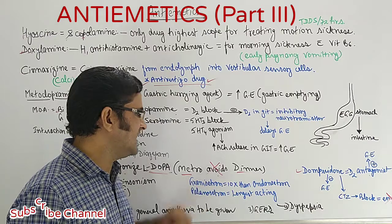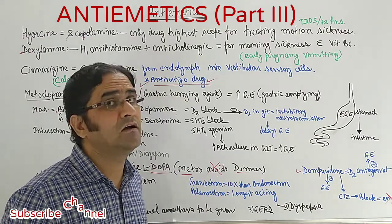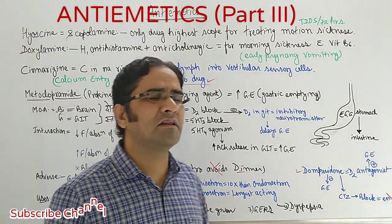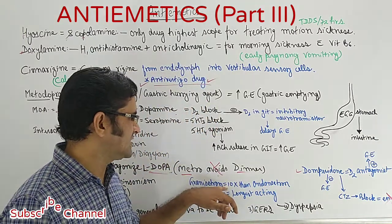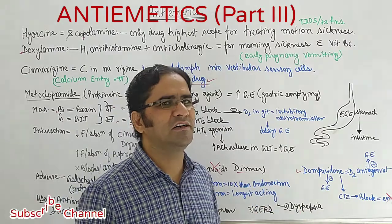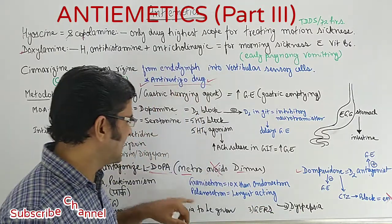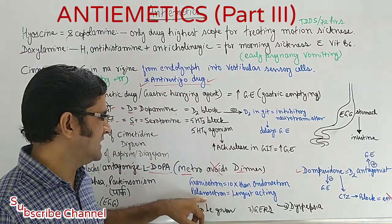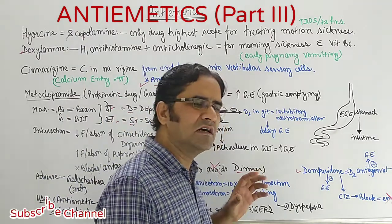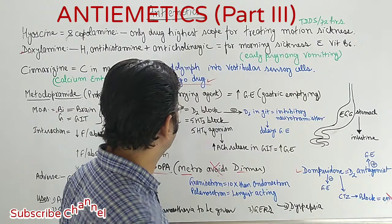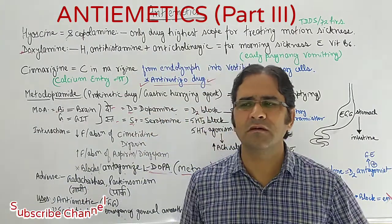Next category: 5HT3 antagonist. The drug is granisetron - granny, grandmother, and grandmother having experience, we know - it means it is 10 times more potent than ondansetron. The question part second is palonosetron - it is the longest acting agent amongst the 5HT3 antagonists. So this is the story about antiemetics part 3, the individual drugs we have taken.